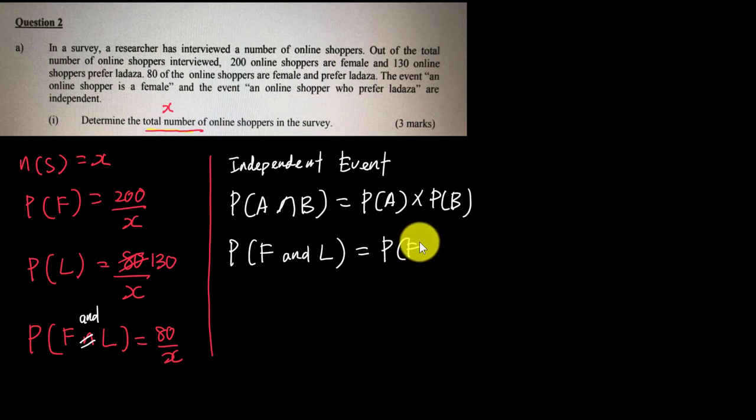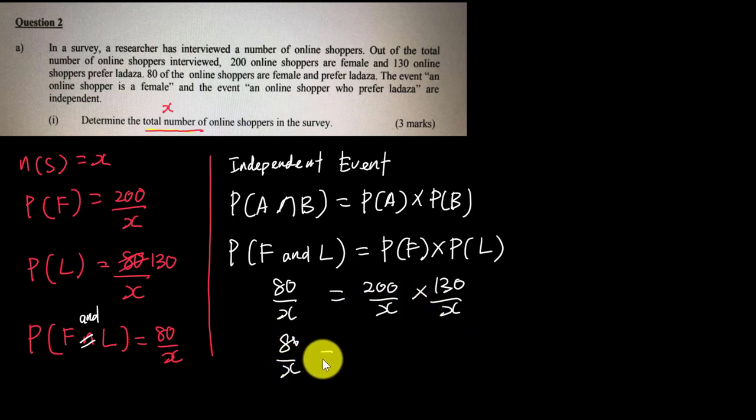Now I'll solve the algebra. 80 over x equals 200 over x times 130 over x. This gives us 80 over x equals 26,000 over x². Moving x² to the other side and simplifying, I get x equals 26,000 divided by 80, which equals 325. What is the meaning of x? x is the total number. Therefore, the total number of participants or online shoppers is 325.